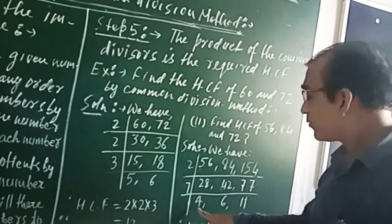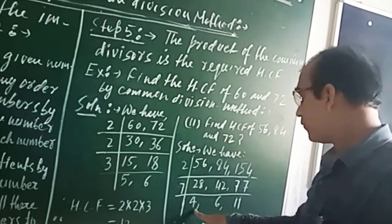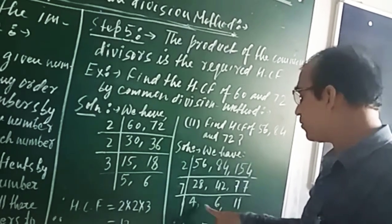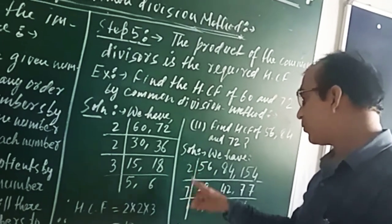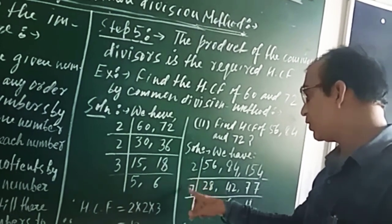Now there is no common factor of 4, 6 and 11 that can divide all three numbers. So our HCF will be the product of common divisors, that is 2 times 7.